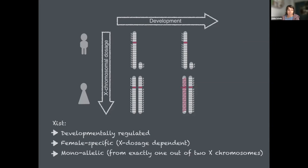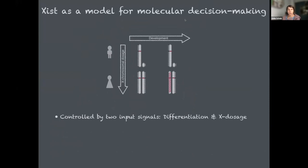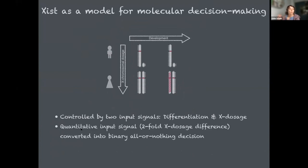Why is this an interesting model for molecular decision making? We have two fairly well-defined signals decoded by the locus: differentiation and development, and X-chromosomal dosage. The XIST locus can sense a quantitative input - only a two-fold difference in X-chromosomal gene expression - and convert it into a binary, all-or-nothing response. XIST will only be upregulated if we have a double dose of X-linked genes. This expression state is then maintained in cis in the nucleus exposed to the same transcription factors, yet only one of the two X chromosomes will express XIST. Today I'll focus on how these two input signals are integrated.